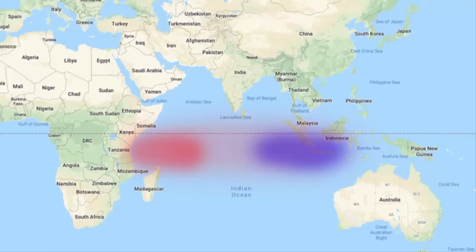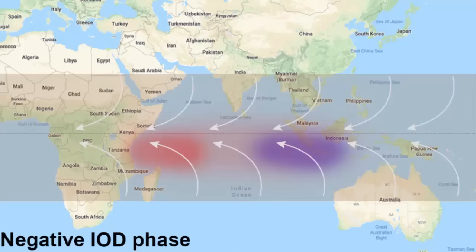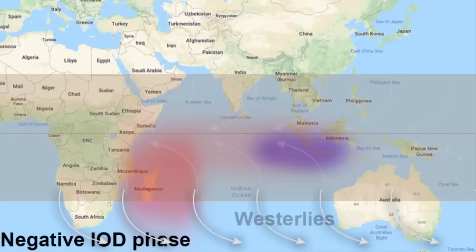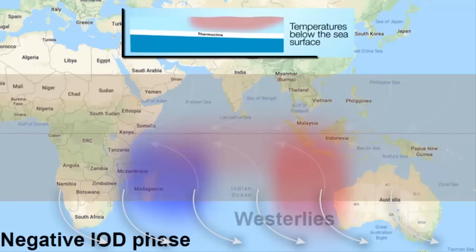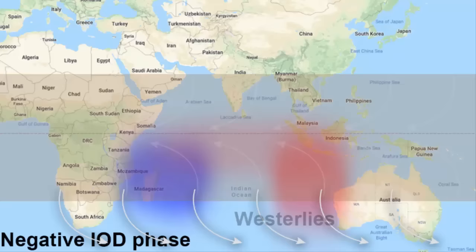The third phase is the negative IOD phase. In this phase, the easterly winds become weak and the westerly winds become strong. The westerly winds push the warm surface water from the western side of the Indian Ocean towards the eastern side, near Indonesia and Australia. When warm surface water accumulates on the eastern side, the deep cold water rises toward the surface on the western side. The warm surface water on the eastern side creates a low pressure zone, the warm air rises, condenses and forms clouds, which results in rainfall.